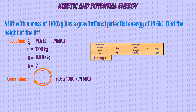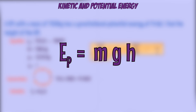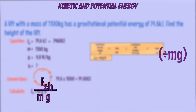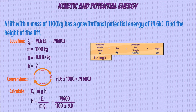Now you're ready to put these values into the equation, but you need to rearrange it as the question is asking for the height. To make height the subject of this formula, you need to move the M and G to the other side of the equation by dividing both sides by M times G. This gives height equals gravitational potential energy divided by mass times gravitational field strength. Subbing the values in gives a final answer of 6.92 meters.